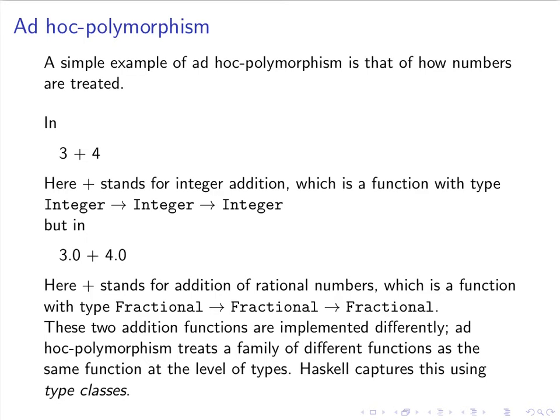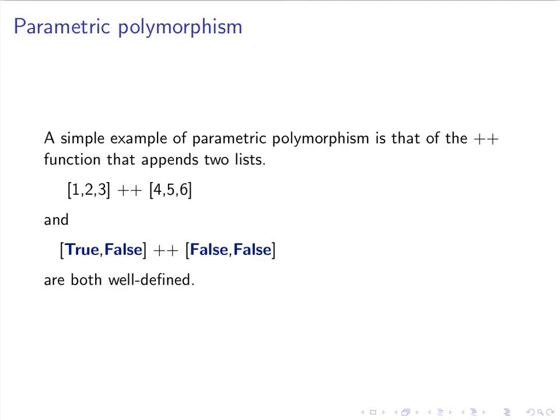We're going to explain this in much greater detail later on. Now let's look at parametric polymorphism. Many of the good examples of parametric polymorphism — the ones that are easy to explain — involve lists. Here's a very simple example: the append function, the plus-plus function that appends two lists.